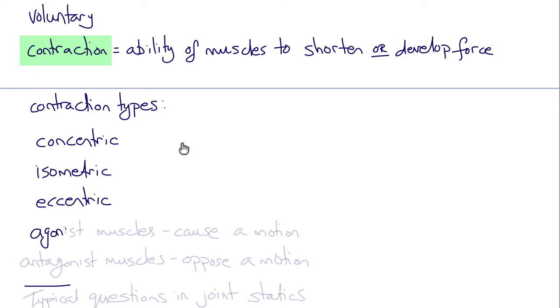And eccentric contractions are contractions that occur when the muscle is lengthening, such as when you're walking downhill or riding a bike. Agonist muscles are muscles that cause a motion, whereas antagonist muscles are muscles that oppose a motion.